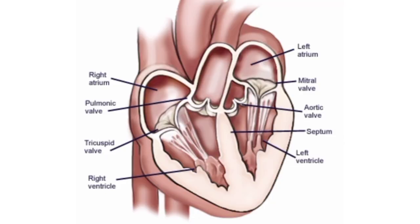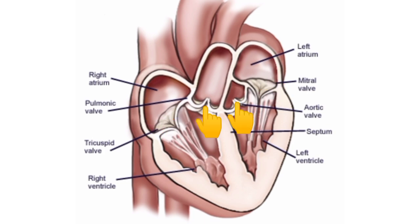There are four valves in the human heart. Two valves are between the atria and ventricles, called the atrioventricular valves. The other two are the semilunar valves, placed at the openings of the blood vessels arising from the ventricles — namely the systemic aorta and the pulmonary artery. The valves of the heart permit the flow of blood through the heart in only one direction.